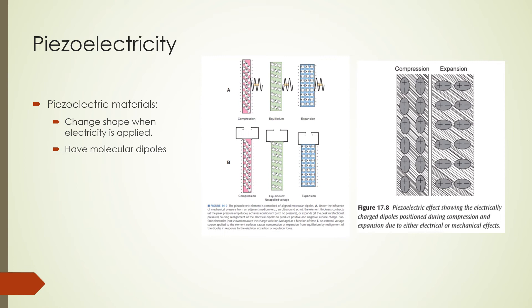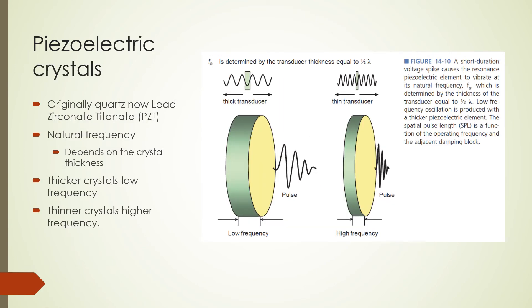Quartz was the first material seen to have piezoelectric properties, but the most used transducer materials in diagnostic ultrasound are synthetic materials. Specifically, a ceramic material made of lead zirconate titanate, or PZT, is commonly used. PZT crystals are made to vibrate at a natural frequency that is determined by the crystal thickness — thicker crystals produce lower frequencies and thinner crystals produce higher frequencies.